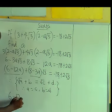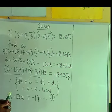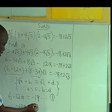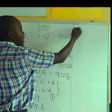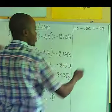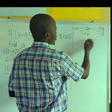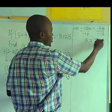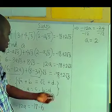Equating the non-root parts: 6 - 12a = -18. Collecting like terms: -12a = -18 - 6, which gives -12a = -24. Dividing both sides by -12, we get a = 2.